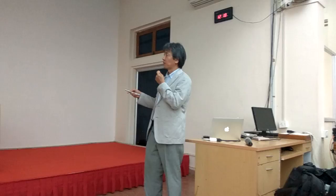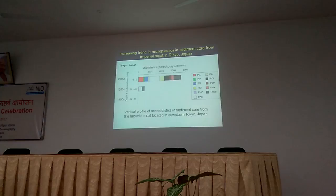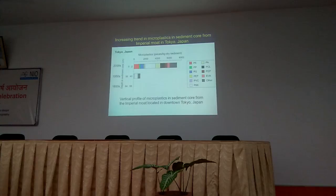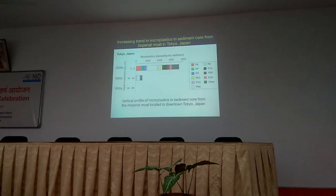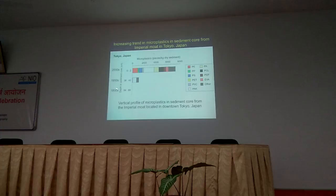The vertical axis means the depth in the core — deeper means the past and shallower means the present. We made dating of this core by using some anthropogenic compounds as markers, and also measured radio nutrients as a time marker. The bottom-most layer corresponds to the 1800s.